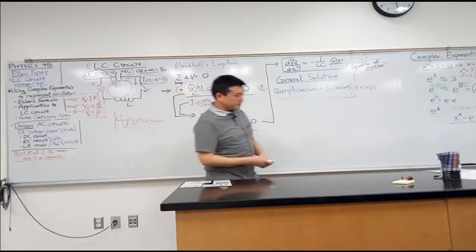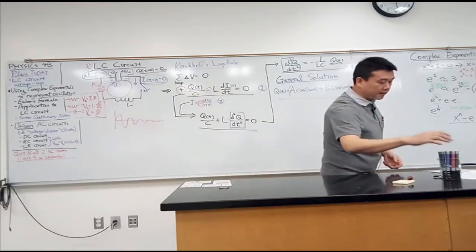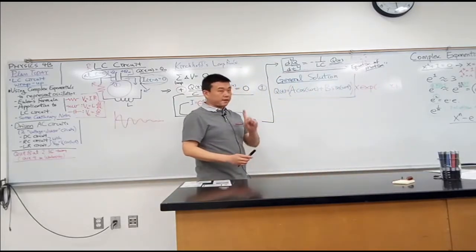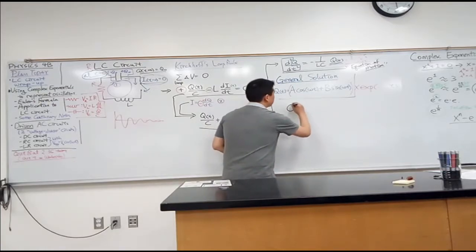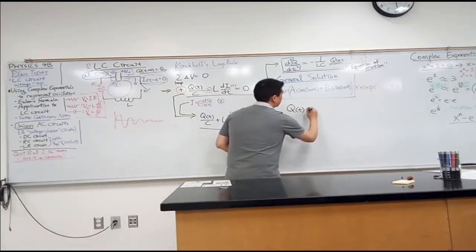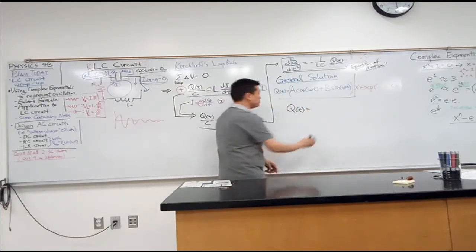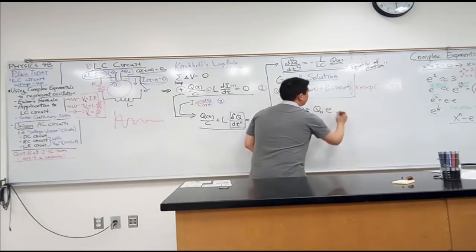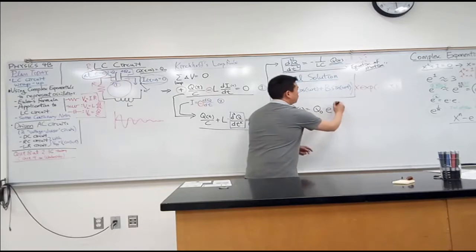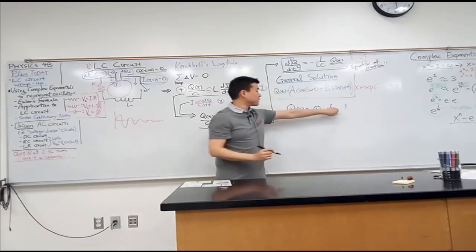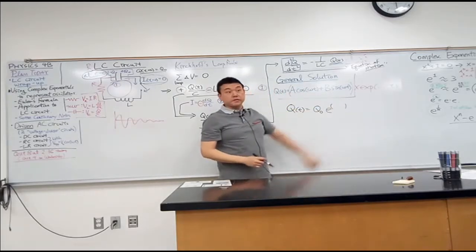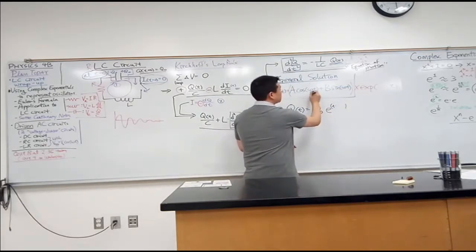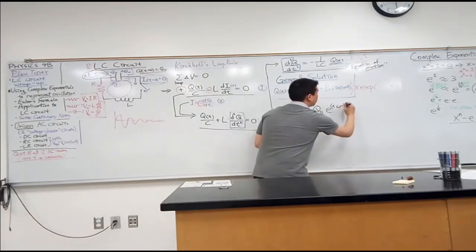What I am saying is this. Instead of guessing this as the solution, I am going to guess this as the solution. q of t is equal to q naught times e to the imaginary number i times omega t, a complex exponential.